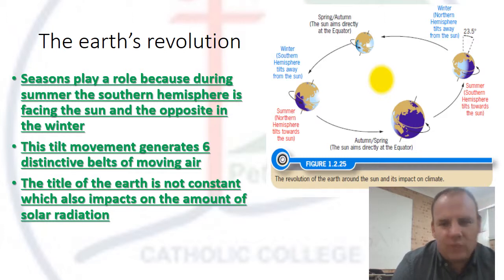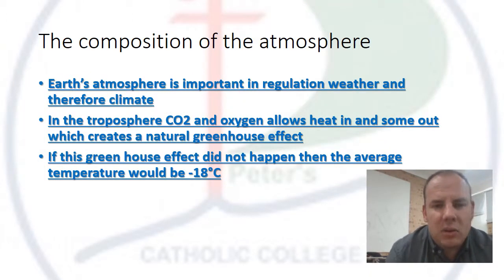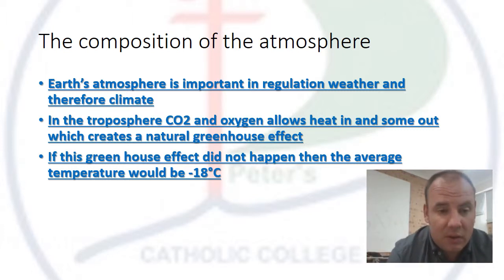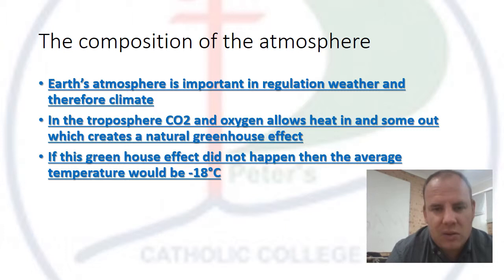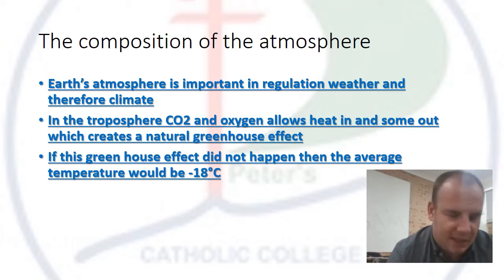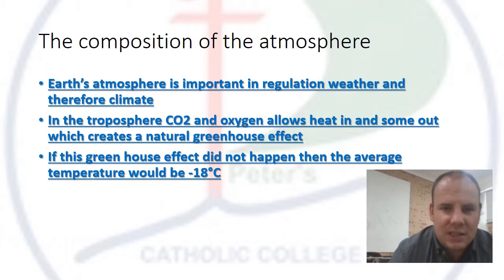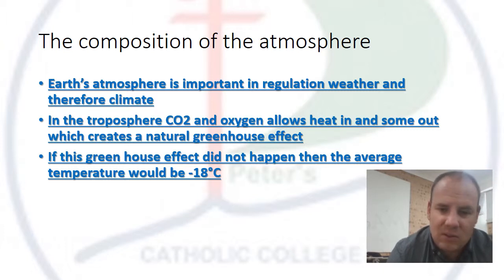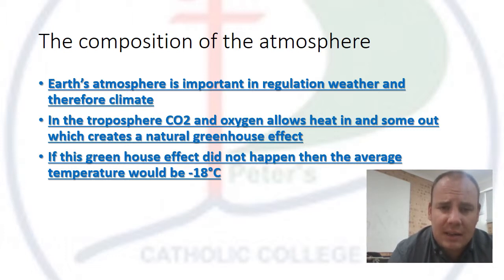The composition of the atmosphere is important because it regulates the weather and therefore climate. Sometimes the composition changes — ozone is thicker in places, there's more pollution — which can be human-induced as well as from volcanic activity. A change in the chemical composition of the atmosphere affects the climate. If the greenhouse effect did not happen, the average temperature would be minus 18 degrees, so we naturally have a greenhouse effect.